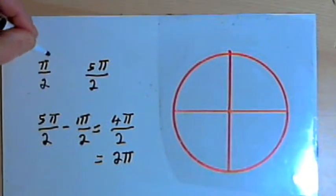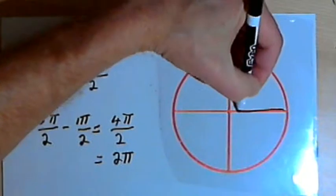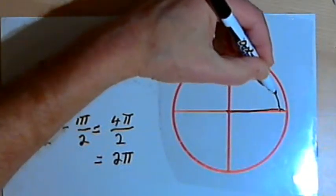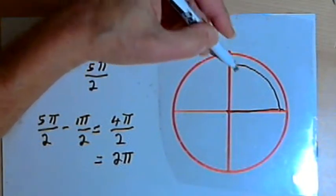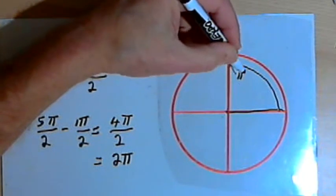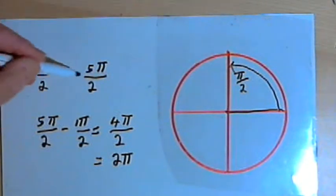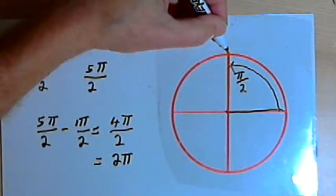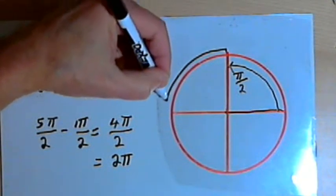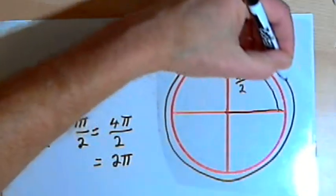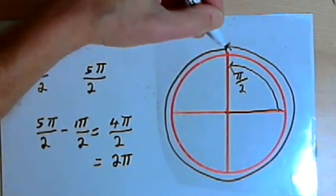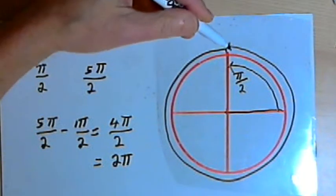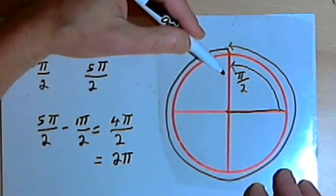Visually, the pi over 2 angle started in the standard position and went to the border between the first and second quadrants. So that's pi over 2. The second angle went around the circle 2 pi and finished up in exactly the same place, coterminal with the first one.